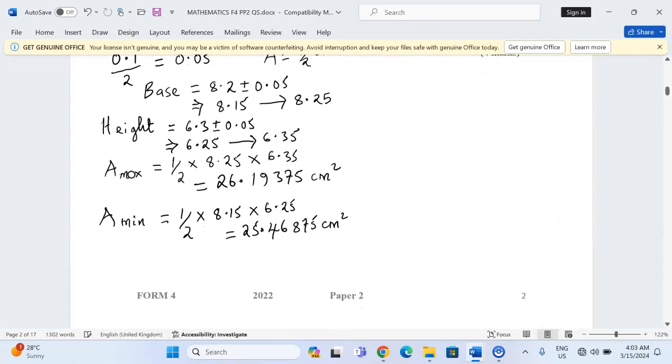Then there is what we call the working area, or the actual area. This is going to be half multiplied by the dimensions as they have been recorded. This is 8.2 and the height of 6.3. So this is going to give us half multiplied by 8.2 multiplied by 6.3.